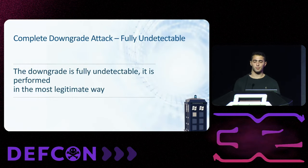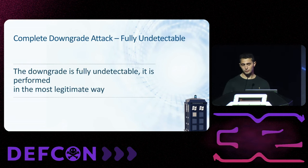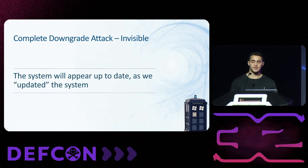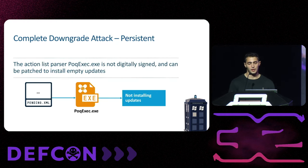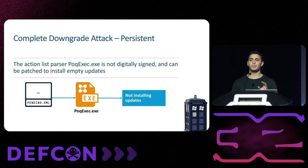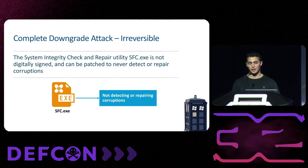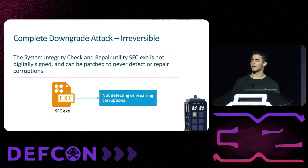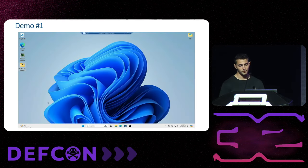Revisiting the downgrade principles: the downgrade is fully undetectable — there is no better way to downgrade Windows. The system will appear up to date since we basically updated the system and didn't uninstall anything. For persistency, I found the action list parser is not digitally signed, so I patched it to install empty updates — meaning future updates will be falsely installed. For recovery, the integrity and repair utility is also not digitally signed, so I patched it as part of the downgrade — the patched version will no longer detect any corruptions.